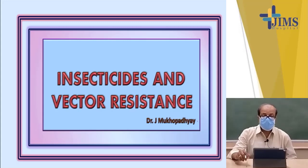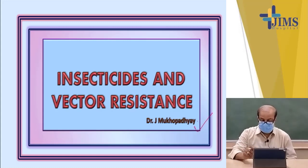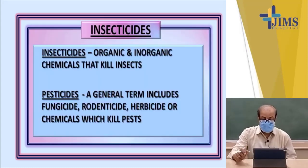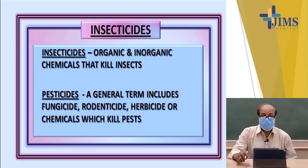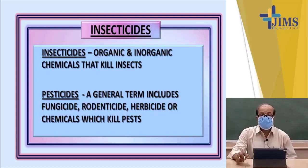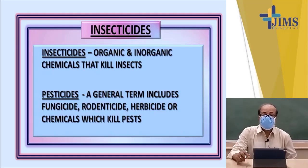This is a very short history about insecticides. Thereafter, many insecticides were developed to kill insects and thereby to prevent certain diseases. Insecticides are organic and inorganic chemicals that kill insects, whereas pesticides is a general term that includes fungicides (which kill fungus), rodenticides (which kill rodents or rats), and herbicides (which kill algae and other unwanted plants).